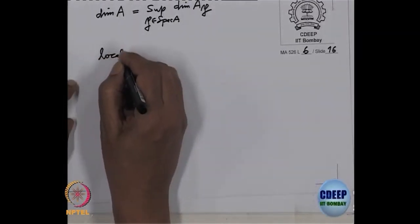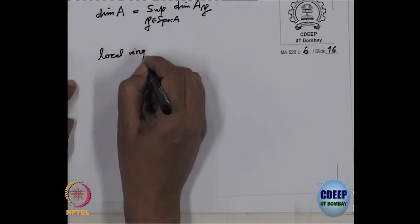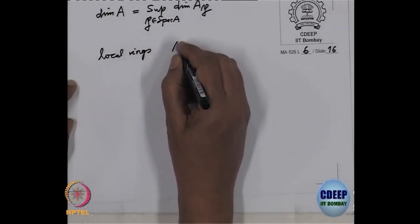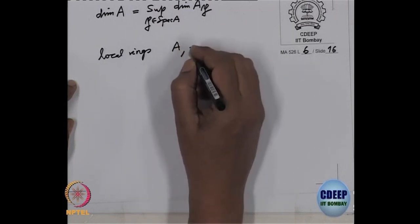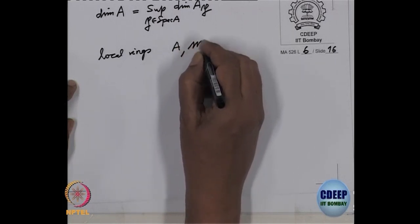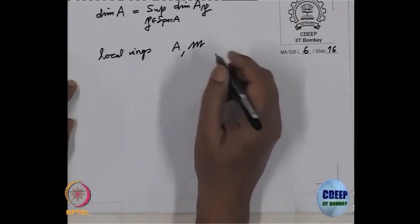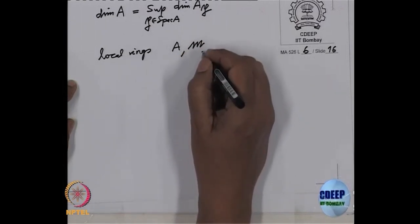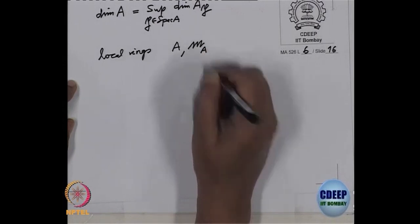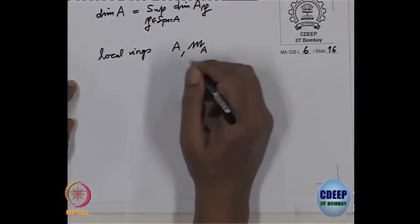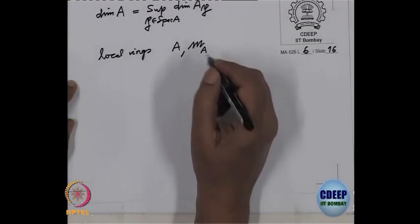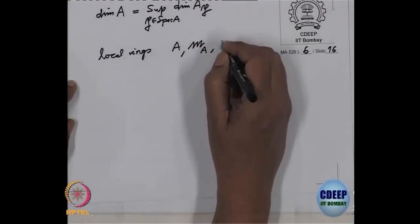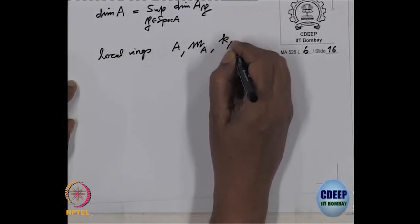So, local rings — that is a commutative ring with only one maximal ideal, also denoted by M. And M is the Jacobson radical of A. The Jacobson radical is usually denoted by M subscript A; that is the intersection of all maximal ideals. And also now there is only one residue field.